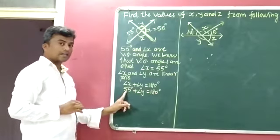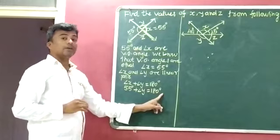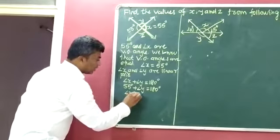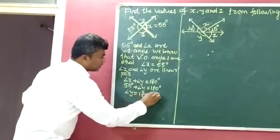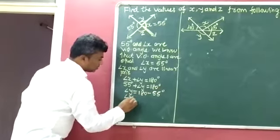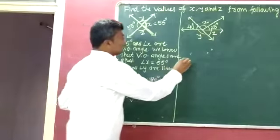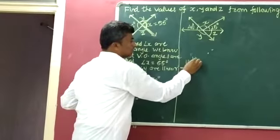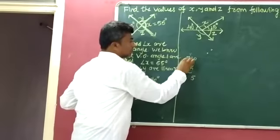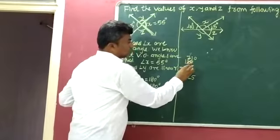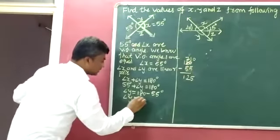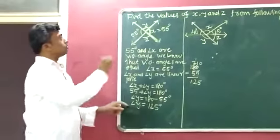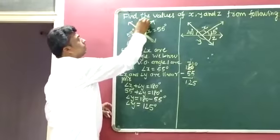We have to identify angle Y, so we move 55 degrees to the other side. This side it is plus, so the other side it becomes minus 55 degrees. So angle Y is equal to 180 minus 55 degrees. So angle Y is equal to 125 degrees.